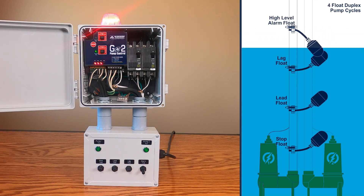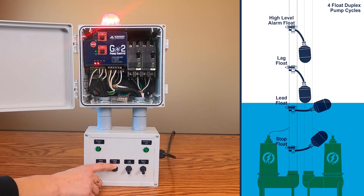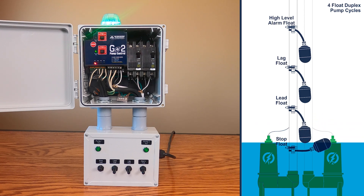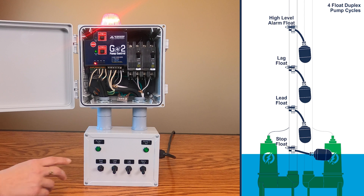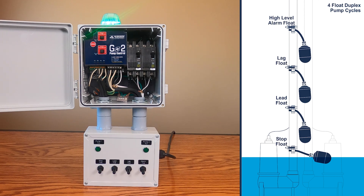The water level will lower and the alarm float will tilt down. As the pumps continue lowering the water level, the lag float will tilt down, then the lead float will tilt down. Notice the pump and alarm beacon will remain on all the way to the off float, at which time the pump and alarm beacon will turn off. This completes the alarm pumping cycle. Note the alarm is automatically reset and the beacon glows steady green indicating normal operation. This completes our demonstration for the GO 2 duplex control panel demonstrating float controlled pumping cycles. Thanks for watching.